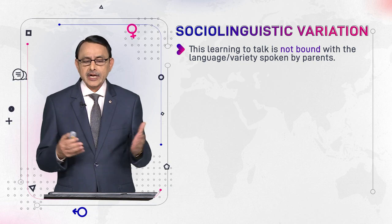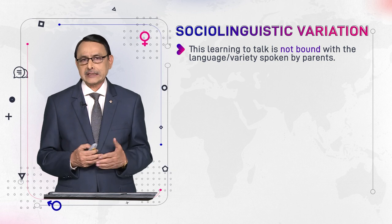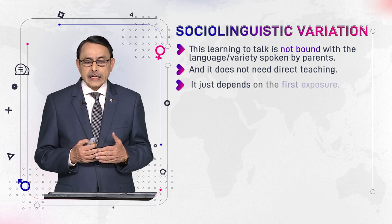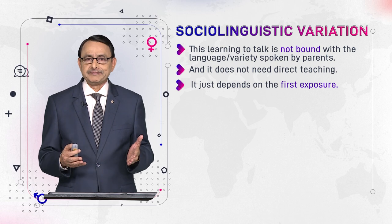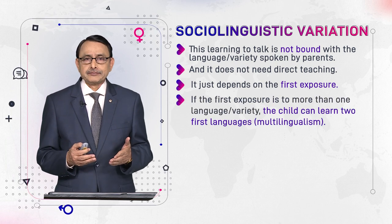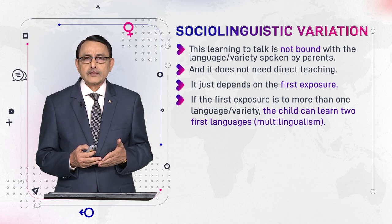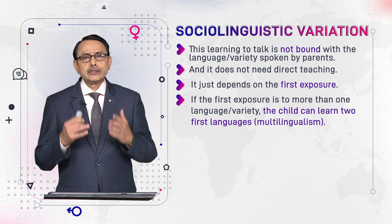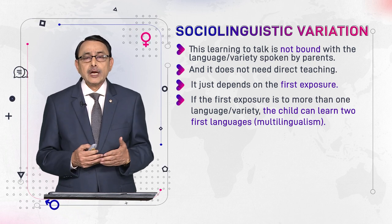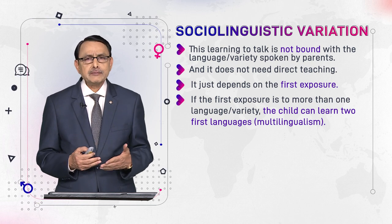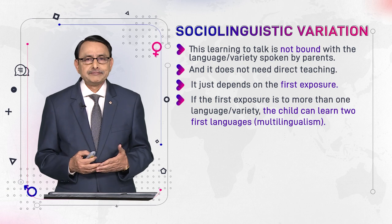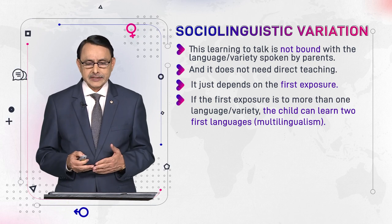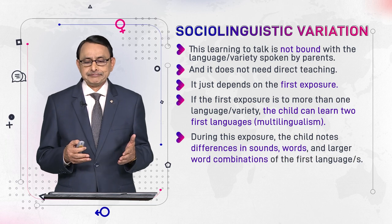This learning to talk in Punjabi is not bound to the language or variety spoken by parents — it does not need direct teaching by parents. It depends on our first exposure. If this exposure during childhood happens to include more than one language or variety, we can learn both simultaneously. This is called multilingualism, and it is the norm of today's modern world — most people speak more than one language.